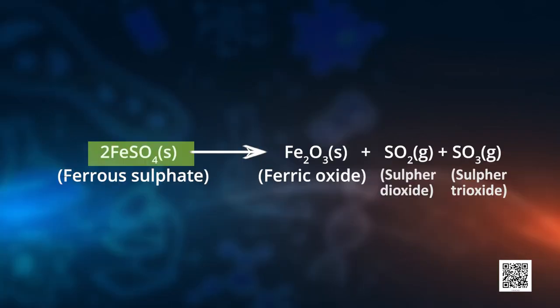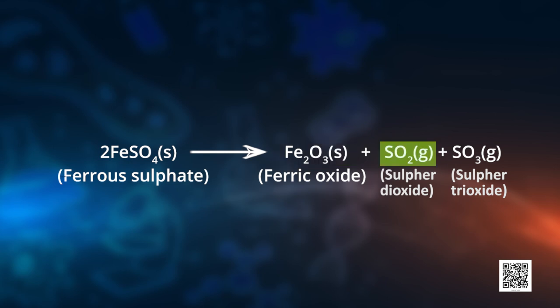Ferrous sulphate decomposes into ferric oxide, sulphur dioxide, and sulphur trioxide. Ferric oxide is solid, while SO2 and SO3 are gases.